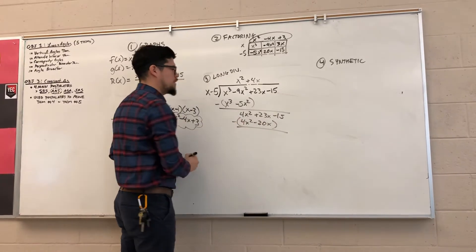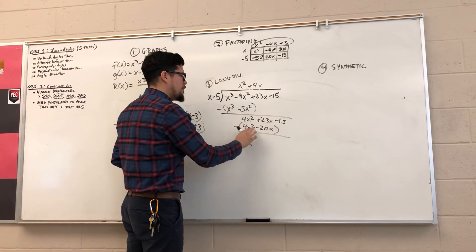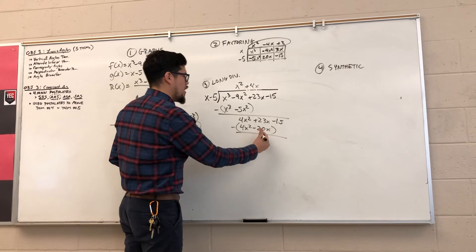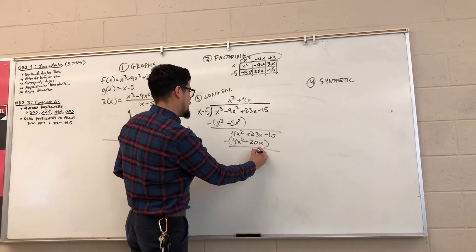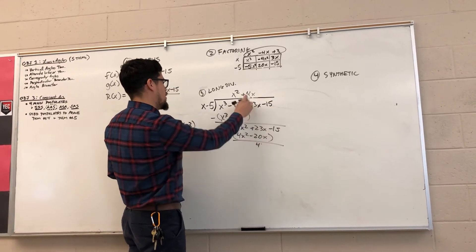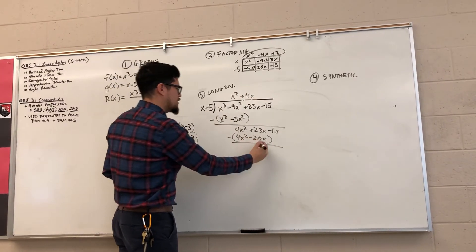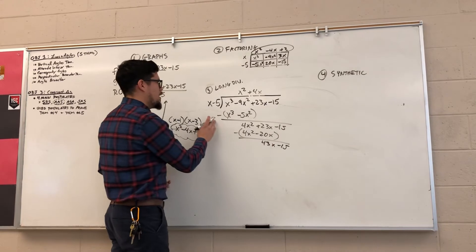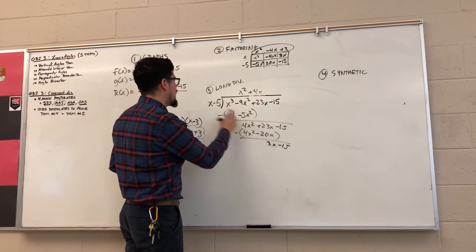Once again, subtract the entire polynomial. 4x squared minus 4x squared is zero. 23 minus negative 20 is really 23 plus 20, which gives me—I think I'm making a mistake right here. I don't think I'm making a mistake right here, but it is okay. Was this a minus 20 or a plus 20? 4x times negative 5 minus 20. Let's see where this goes. I'm supposed to get a 3x right here. I don't know where I made my mistake.